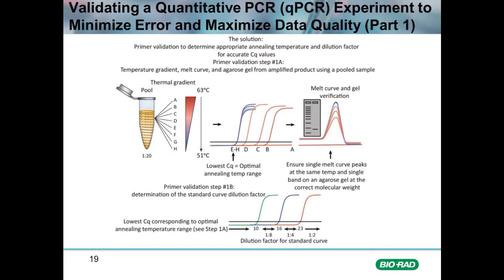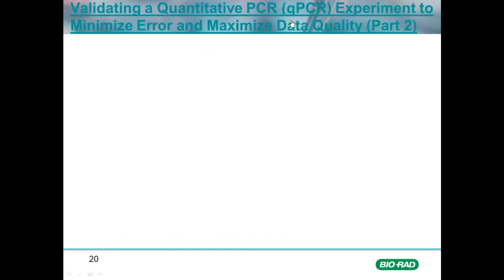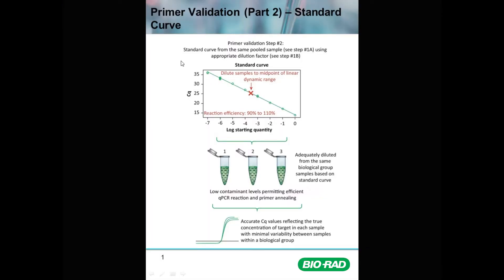The next step after thermal gradient validation is to perform a standard curve, which can only be done once the correct annealing temperature has been identified, because the standard curve must be run at the optimal annealing temperature for the primers. The standard curve is a serial dilution series of the same pooled cDNA sample used for the thermal gradient, and it looks like what we see here in this figure, where each dilution was calculated to produce an excellent standard curve.